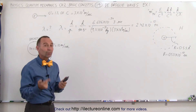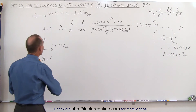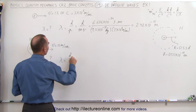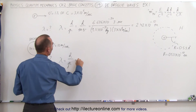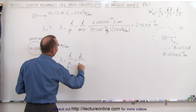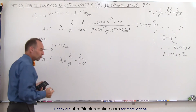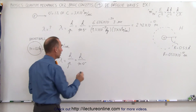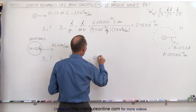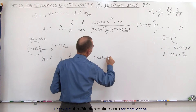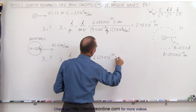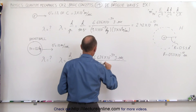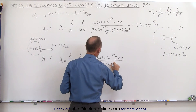Now let's see if this applies to basketballs. We use the same equation: lambda, the wavelength of a basketball, equals Planck's constant divided by momentum, which is h divided by mv. I'm not quite sure what the mass of a basketball is, but I'll estimate 0.2 kilograms. So: 6.626×10⁻³⁴ joule·seconds divided by 0.2 kilograms and a velocity of 10 meters per second.